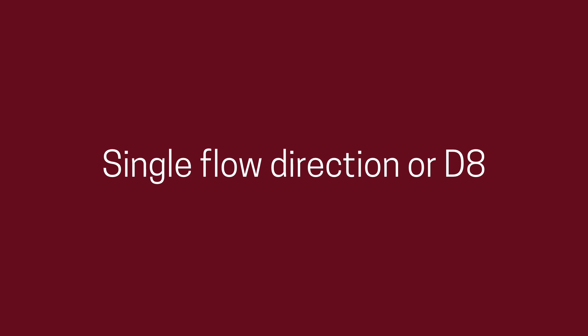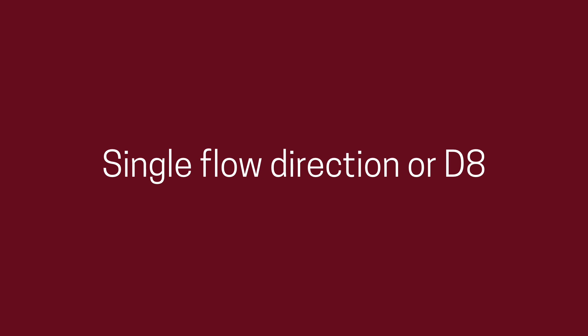up, down, left, right, and the diagonals. The idea of the method is to assign all the flow of a cell towards its neighbor with the steepest downward slope. So let's look at how this works in practice using the previous example.